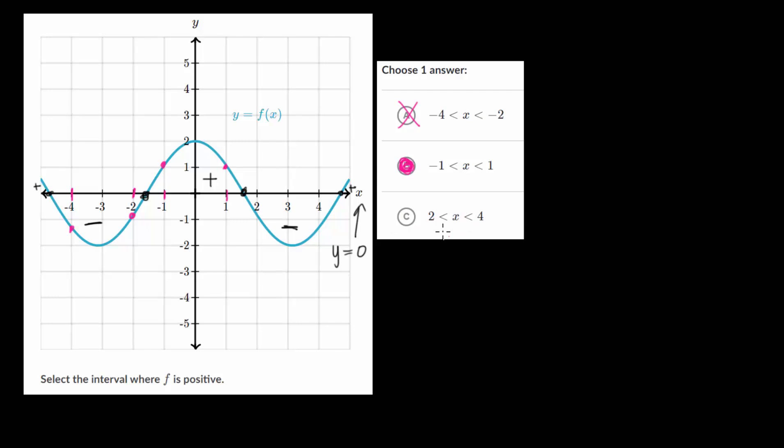And just to double check with the last one, from 2 to 4, we're looking at from here to here, but in this interval, as we'd expect, it's all negative for the y values. So that one is not correct, which justifies that choice B is the correct answer here.